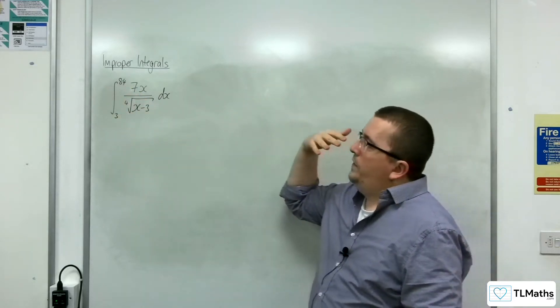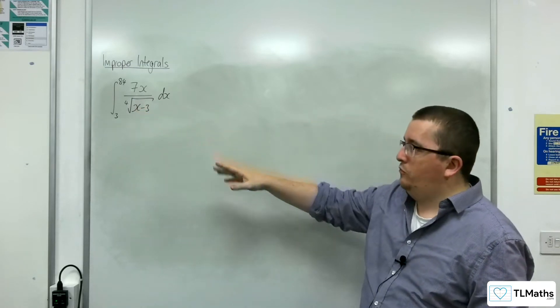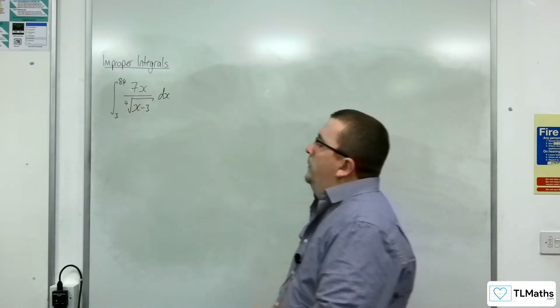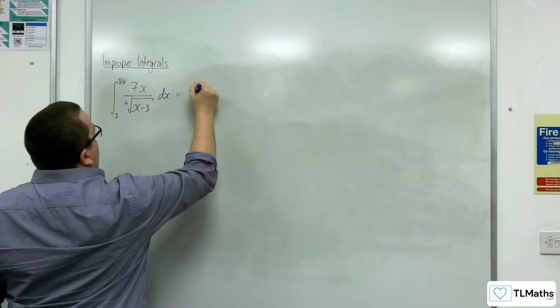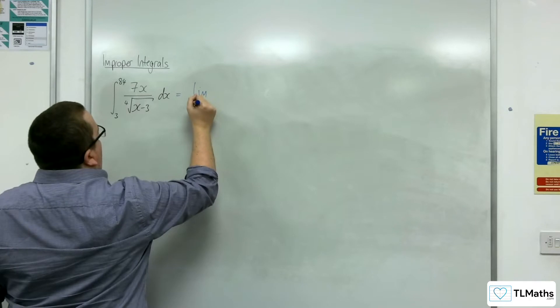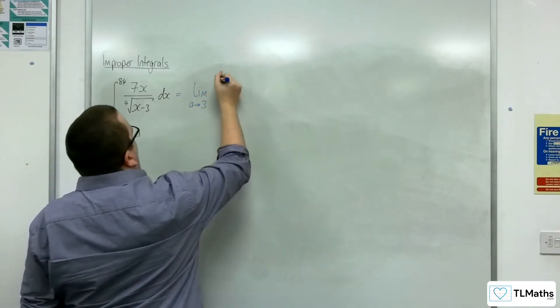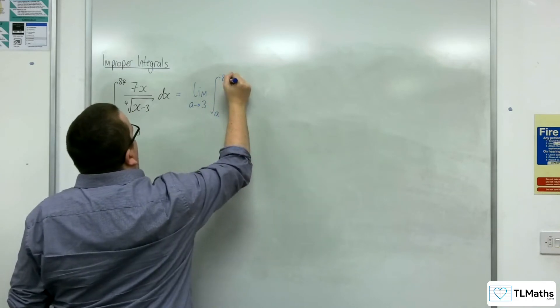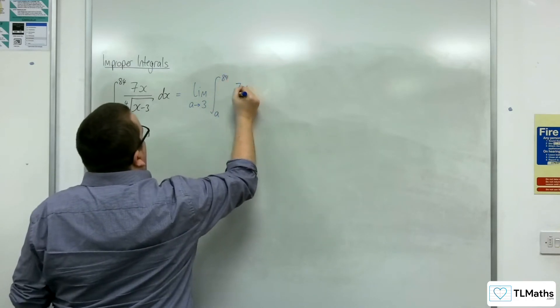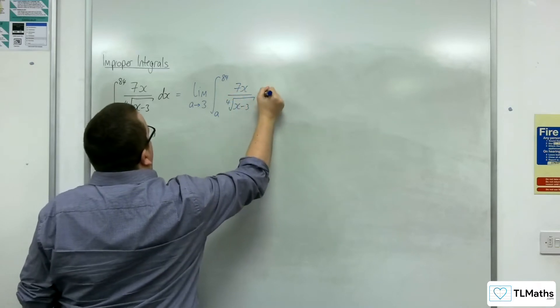Now the problem is that with x equals 3, we're going to be dividing by 0. That's what's making it the improper integral. So I'm going to need to write this as the limit as a tends to 3 of the integral between a and 84 of 7x over the 4th root of x take away 3 dx.